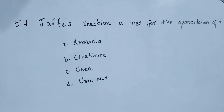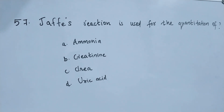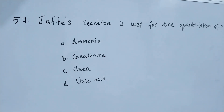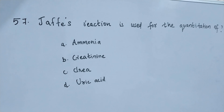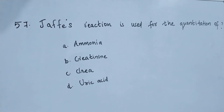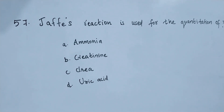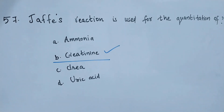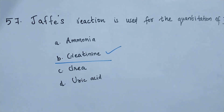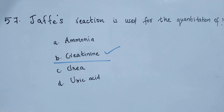Question number 57. Jaffe's reaction is used for the quantitation of: option A ammonia, option B creatinine, option C urea, option D uric acid. The right answer is option B. Jaffe's reaction is used for creatinine.